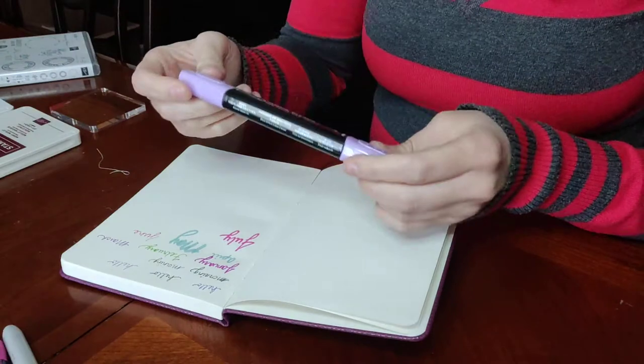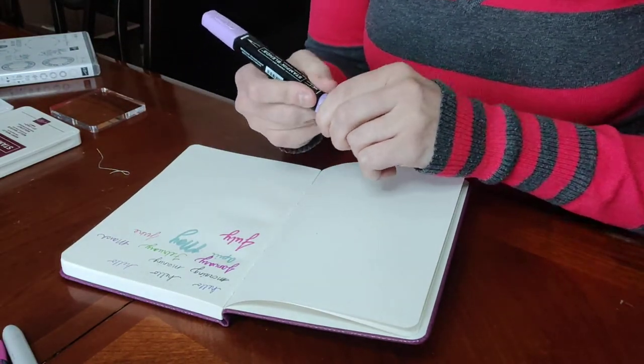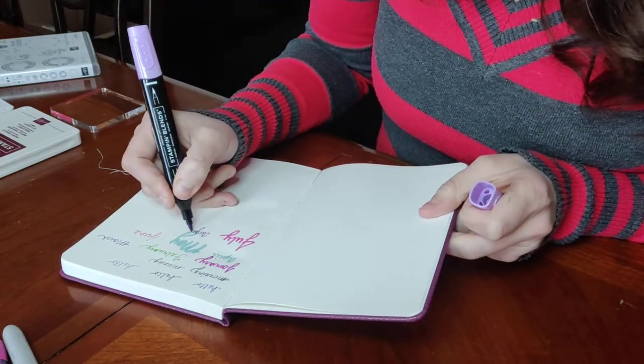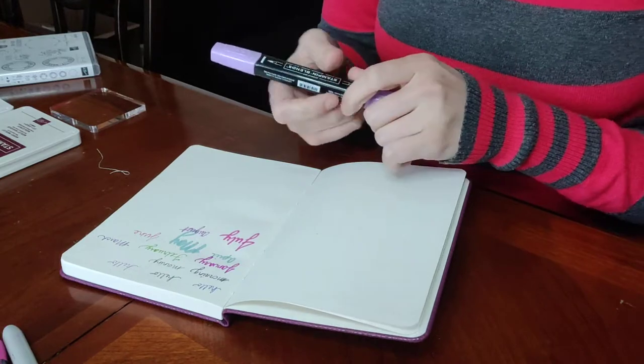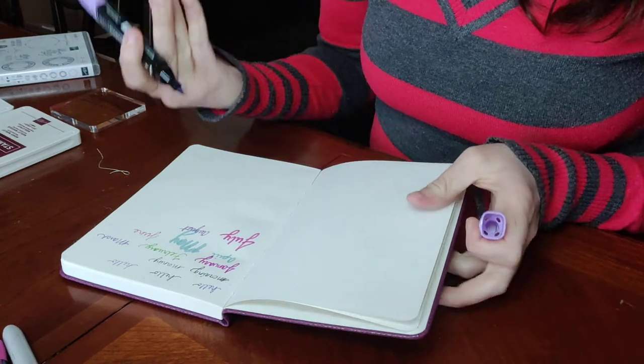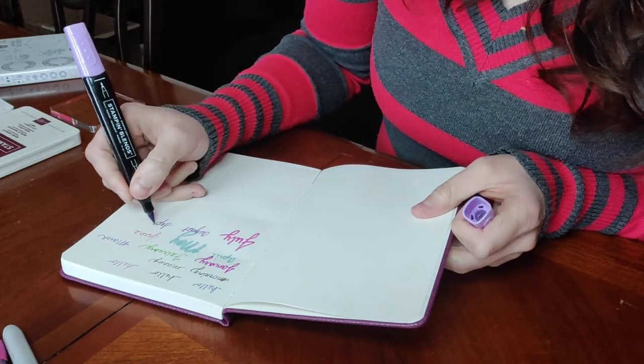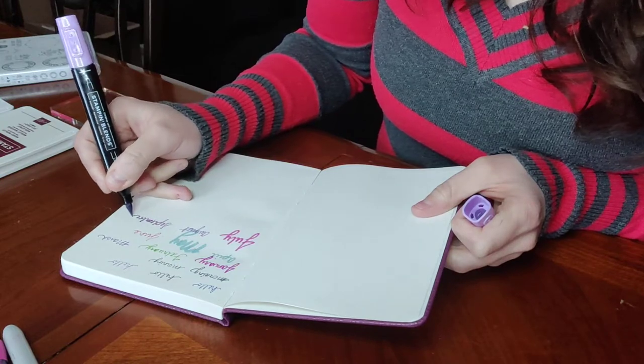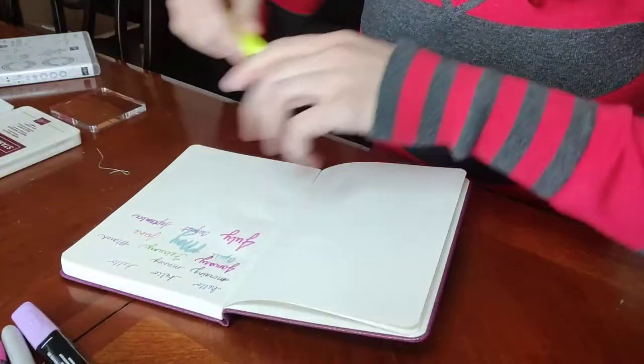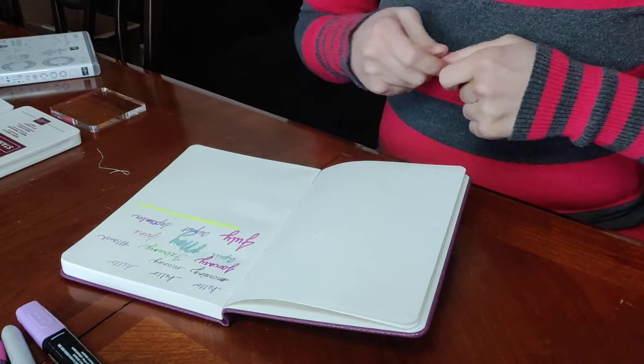I then have the Stampin' Blends pens from Stampin' Up. I'm going to go ahead and use the marker side first. Then I'm going to try with the fine tip marker side. This is actually more of a calligraphy pen. This is the first time I've used these pens. Then I have a highlighter. Let's see how those did.